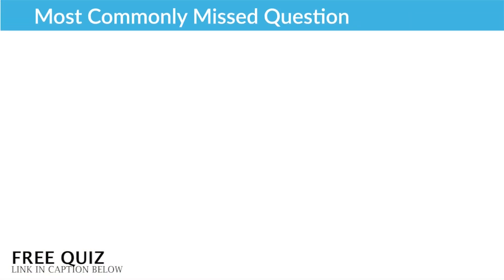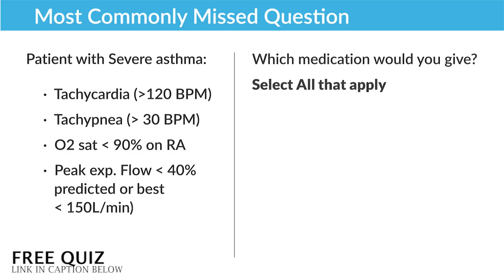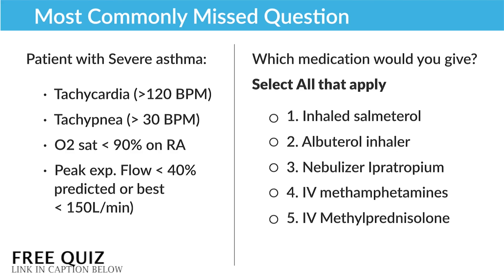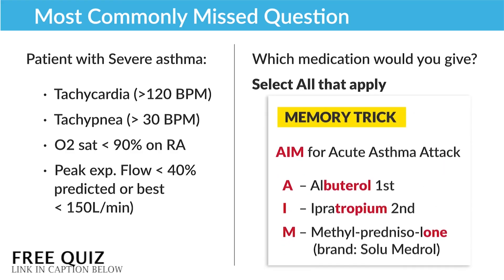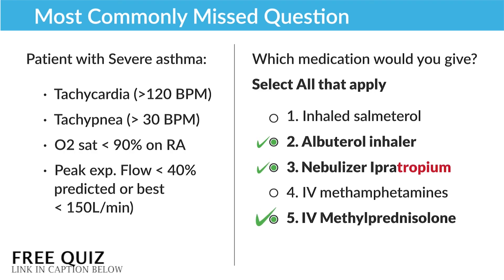A common question on exit exams: they'll present a patient with severe asthma with abnormal vital signs and ask which medications you would give — select all that apply. Remember, during asthma attacks we give AIM: albuterol, ipratropium, and methylprednisolone. The correct options here are albuterol inhaler, nebulizer ipratropium, and IV methylprednisolone.